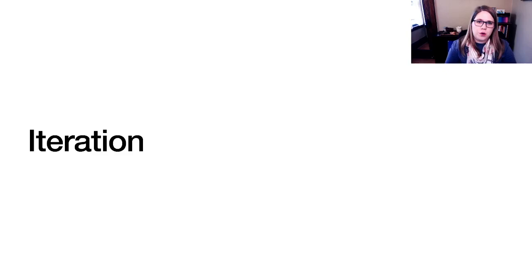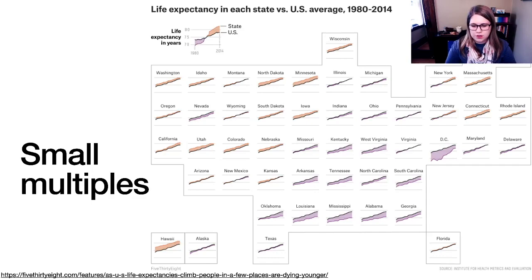Another way that you could show more data is by using iteration. So the most common version of this is called small multiples. And with small multiples, you make the same plot many times for different subsets of the data. So I really liked this visualization, which is small multiple plots for every state in the United States, and then showing the same graph. So they could have shown this all on one picture, and it would have just been a bunch of spaghetti. But by showing small multiples, it's actually possible for us to track these trends and see where people are dying sooner or dying later than before.